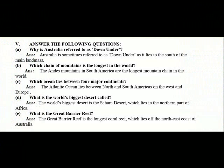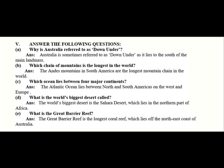Continental Ocean — answer the following question. Why is Australia referred to as Down Under? Australia is sometimes referred to as Down Under as it lies to the south of the Prime Latitudes.